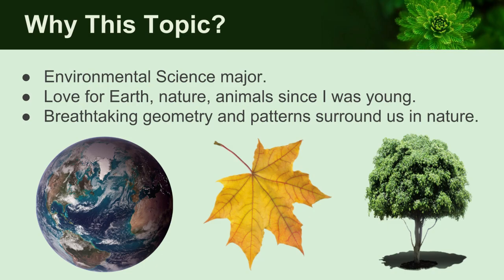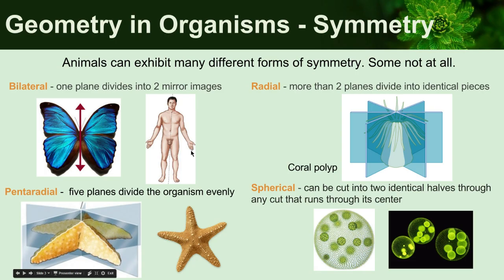I always loved nature and all that good stuff. I've always noticed the patterns and crazy things that you can see everywhere you go on earth, which is interesting. So that's why I chose this topic. So, geometry in organisms — there's always a lot of symmetry in organisms. In fact, most organisms on earth show some kind of symmetry. Some do not, however. Obviously sea sponges are the prime example.